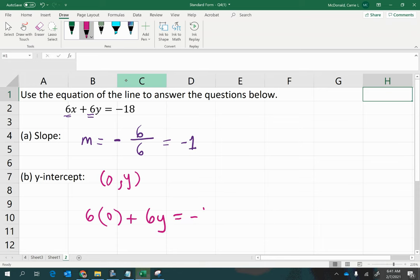Notice that the x term zeros out, and then you have a simplified equation to solve for y. You would get y equals negative 18 divided by 6, which gives you negative 3. That is the y-intercept coordinate that would go in the ordered pair.